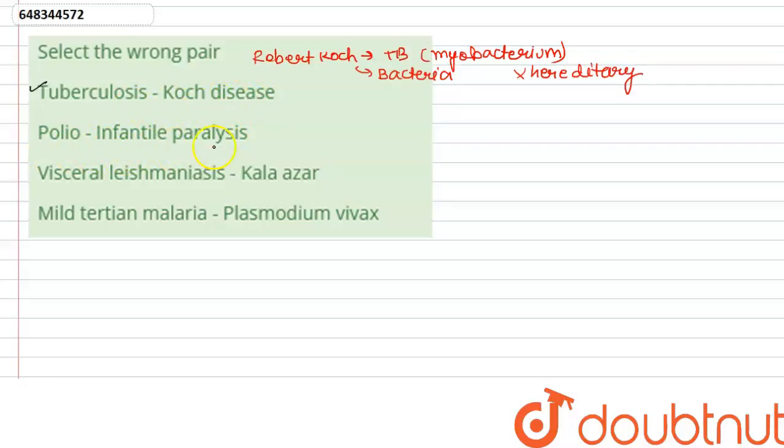Second one is polio matched with infantile paralysis which is also correct. Polio is caused by a virus known as polio virus. It causes paralysis mostly in infants or young children, so it is also known as infantile paralysis. So it has been correctly matched.